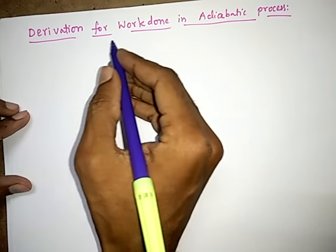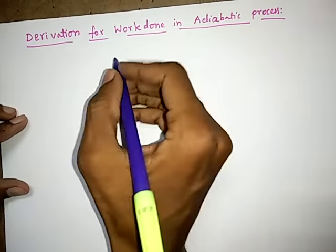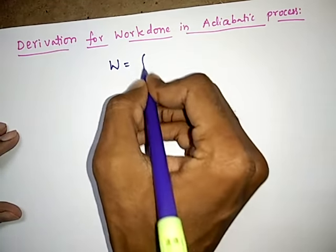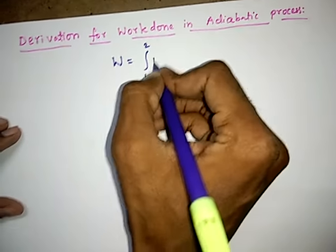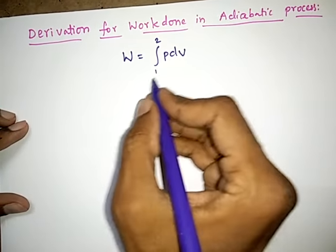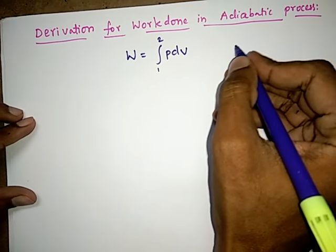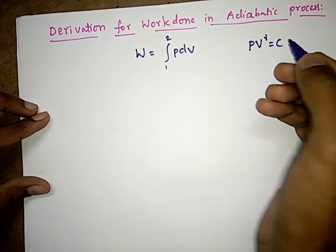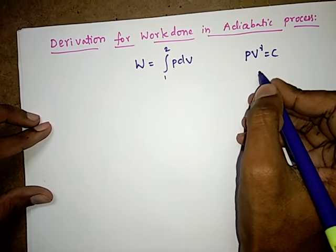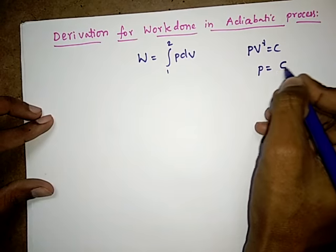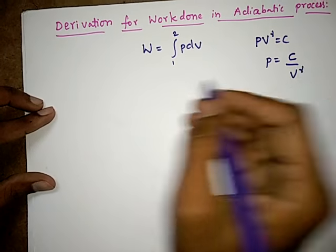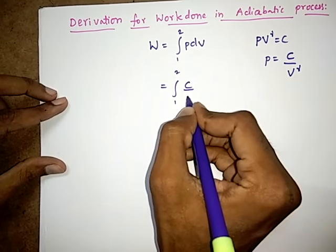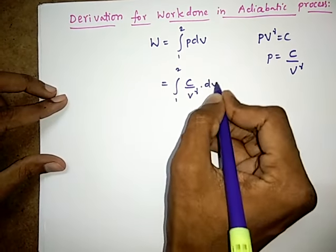Now we are going to see the derivation for work done in the adiabatic process. We know that work done in any process is given by integration from 1 to 2 of P dV. In the adiabatic process, it is represented by PV to the power gamma equals constant, and if I replace P, I can write C by V to the power of gamma, where C is the constant.